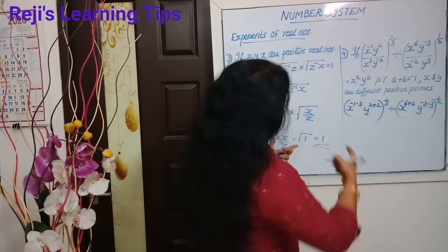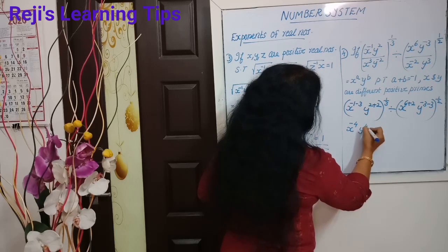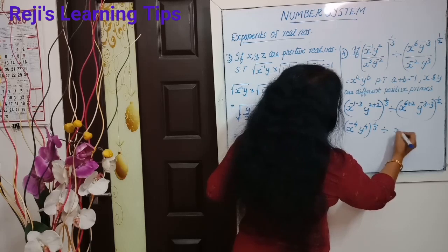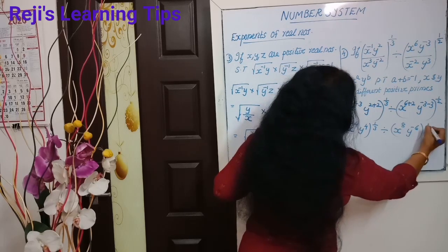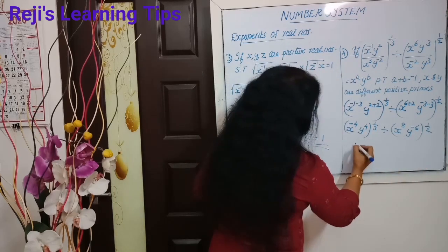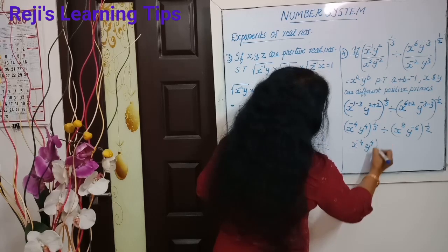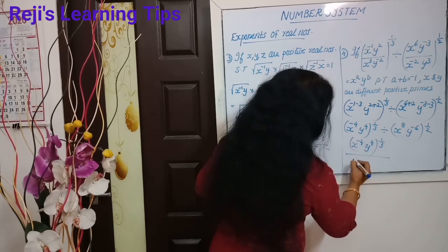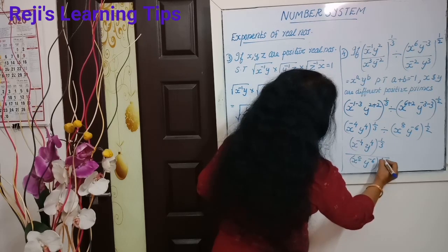Then we can solve here: x raised to minus 4, y raised to 4, the whole raised to 1 by 3, divided by x raised to 8, y raised to minus 6, the whole raised to 1 by 2. Then we can write here x raised to minus 4, y raised to 4, the whole raised to 1 by 3, divided by x raised to 8, y raised to minus 6, the whole raised to 1 by 2.